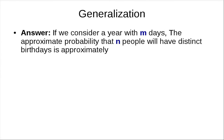So in the previous segment we asked if we have a year with M days and there are N people, what's the probability that they all have distinct birthdays? Previously if you have 365 days, the probability is e to the minus roughly N squared over 2 times 365. So it's roughly this.